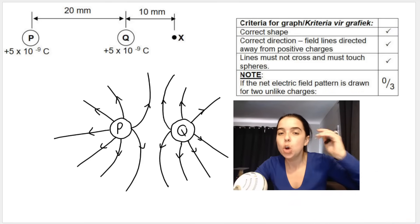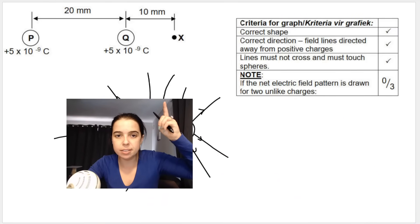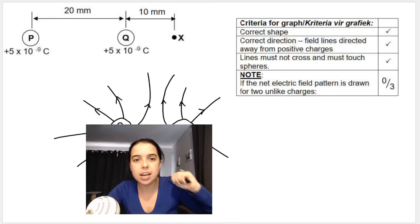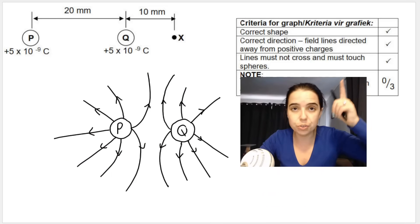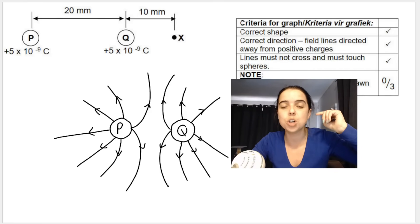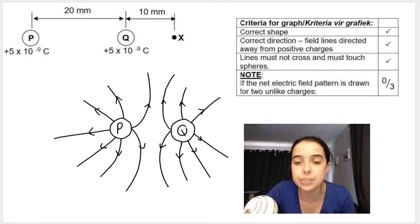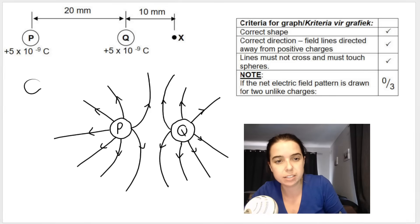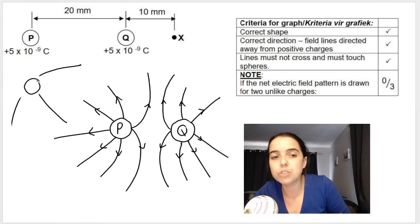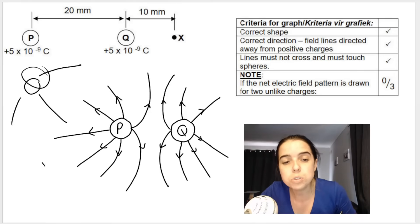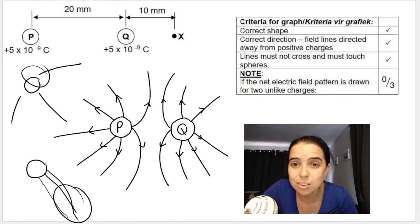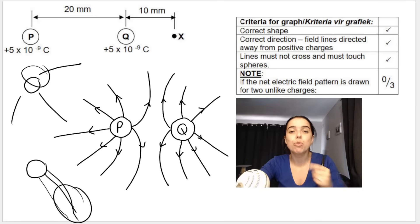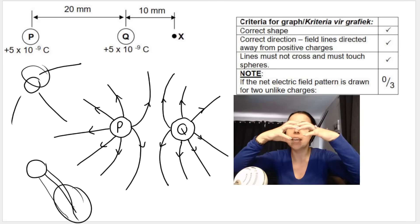For marking: you get a mark for the correct shape — you can see how it bends away here and is almost straight in the outer regions. Correct direction means the field lines must be directed away from the positive charge. Lines must not cross and must touch the spheres. If you draw floaters — lines not touching the sphere — you won't get the marks. Also, the lines mustn't cross each other. If you draw a net electric field pattern for two unlike charges, where they go together, you get zero.